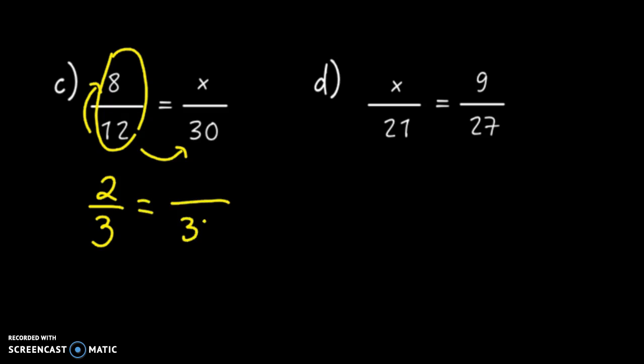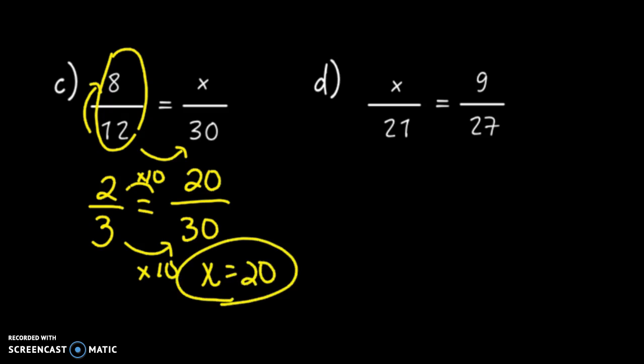So really, I'm saying 2 thirds equals what out of 30? And now that I've reduced 8 twelfths, I have a really nice scaling factor. 3 times 10 is 30. So 2 times 10 is 20. In this case, x equals 20. All I had to do was reduce and then it made it easy.